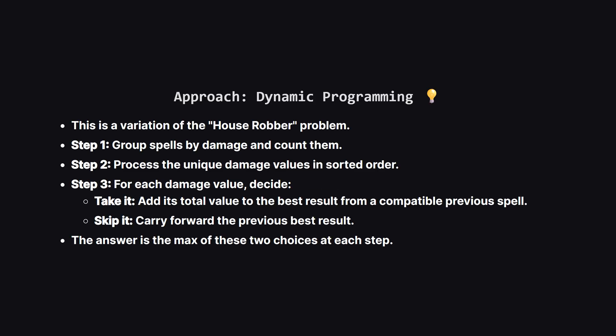The core idea here is dynamic programming. If you've ever seen the House Robber problem, where you can't rob adjacent houses, this is very similar. First, we'll group our spells by damage value and count how many of each we have. Then we'll go through these unique damage values one by one in increasing order. At each damage value we face a simple choice: take all the spells of this damage, or skip them. If we take them, we get their total damage but add it to the best possible score from a previous spell that's far enough away. If we skip them, we just take the best score we had right before this step. We'll always choose the option that gives us a higher score.